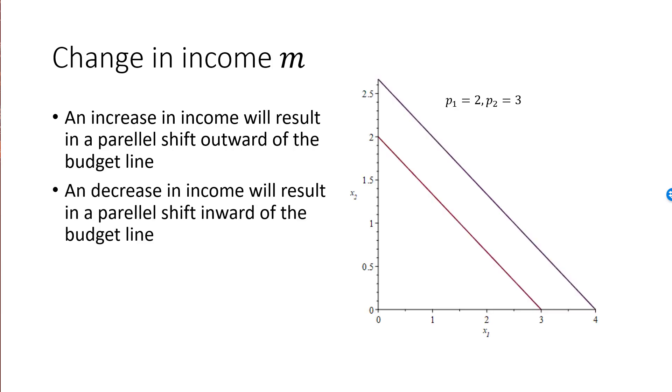As an example, here is the budget line for m equal to 6. If m increases to 8, there is a parallel shift outwards. The new intersection with the y-axis is now 8 divided by 3, or 2.67. The new intersection with the x-axis is 8 divided by 2, or 4.